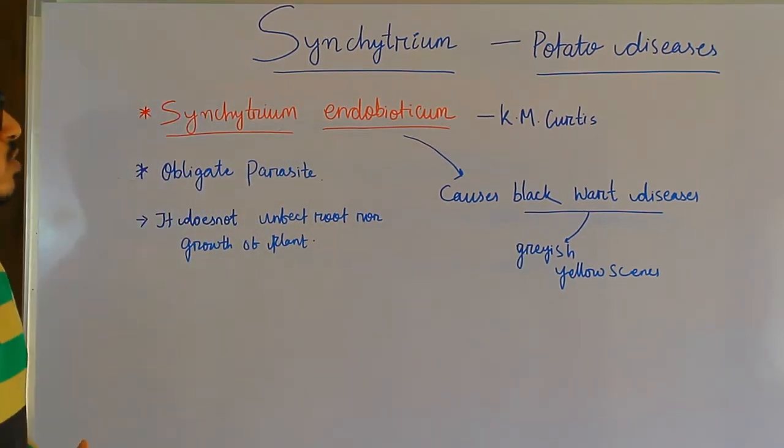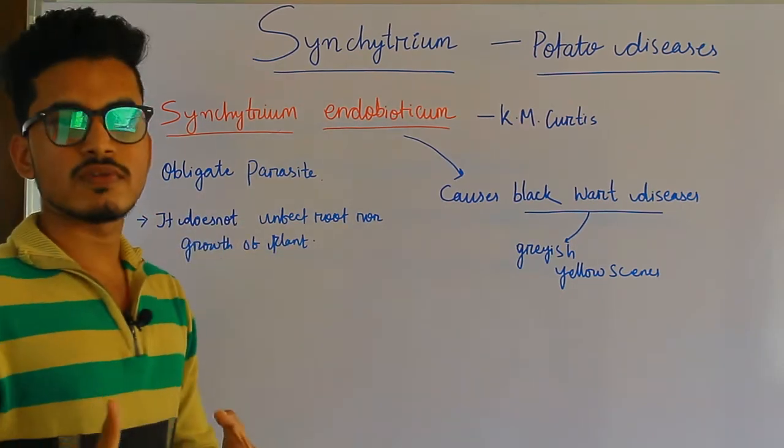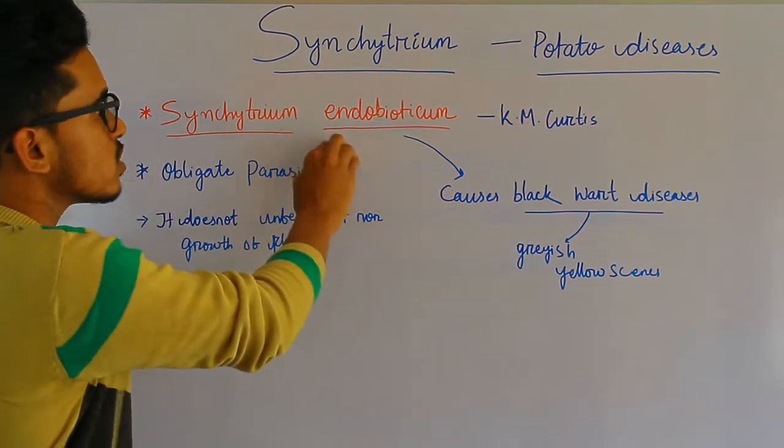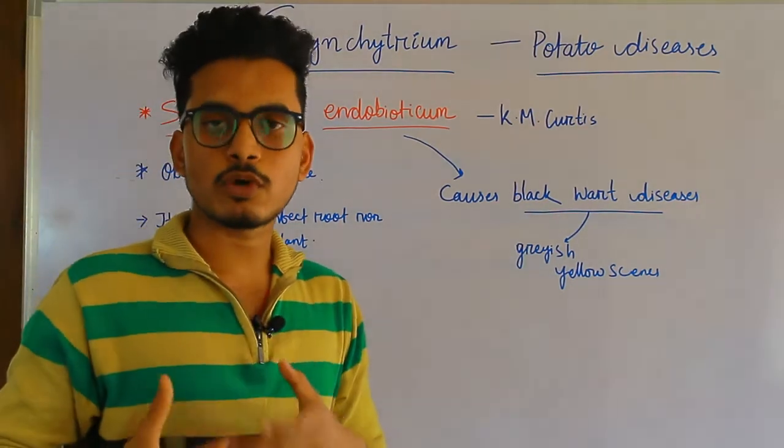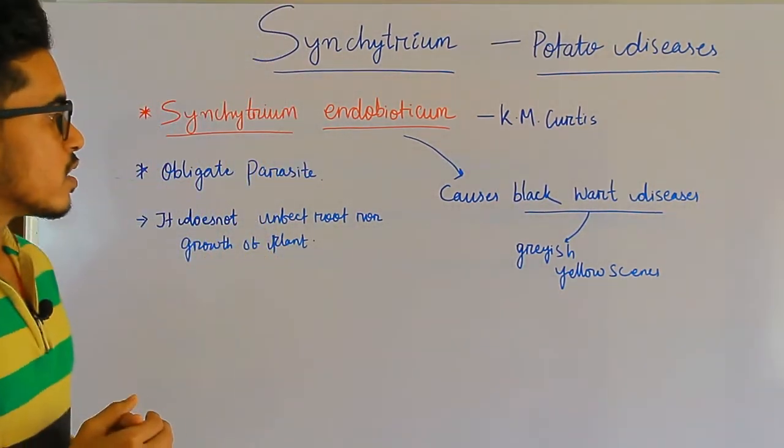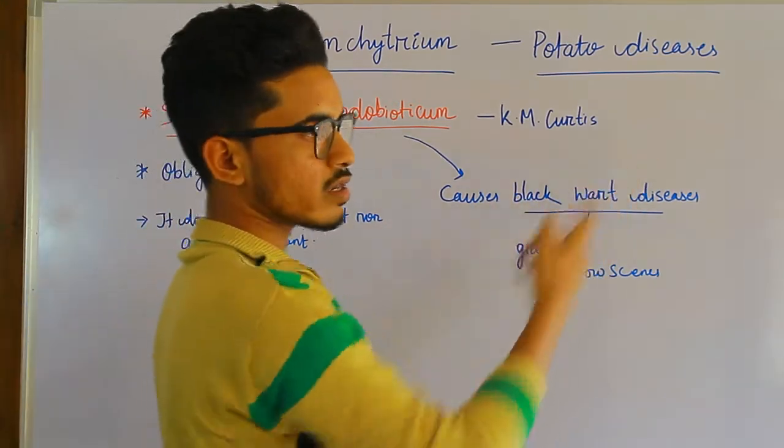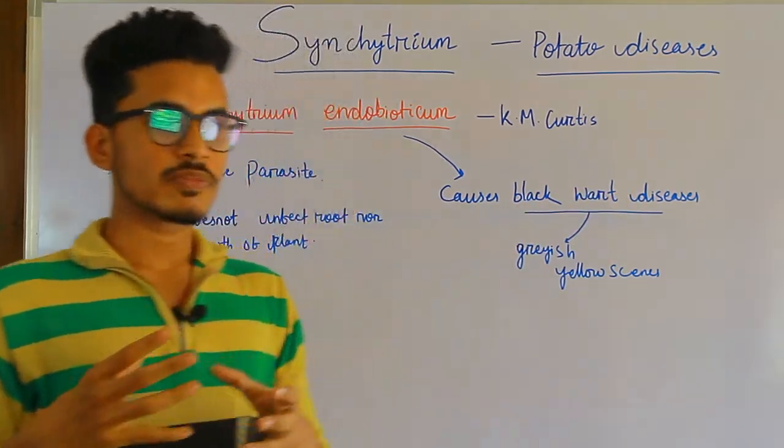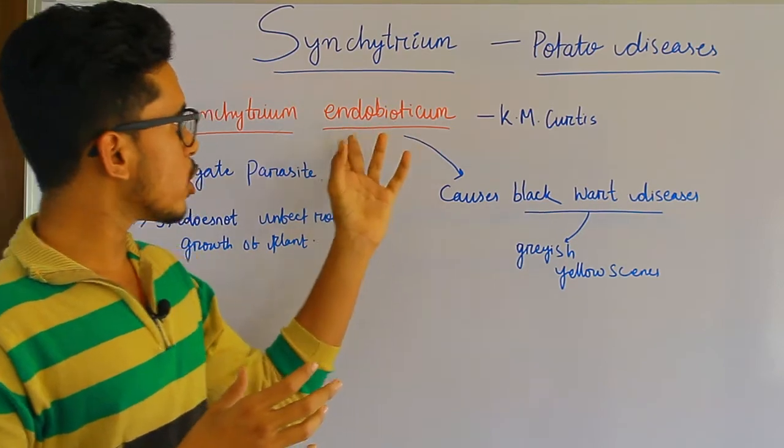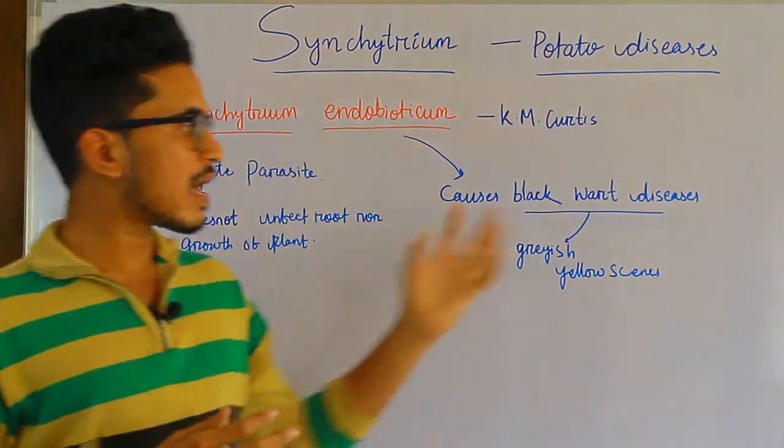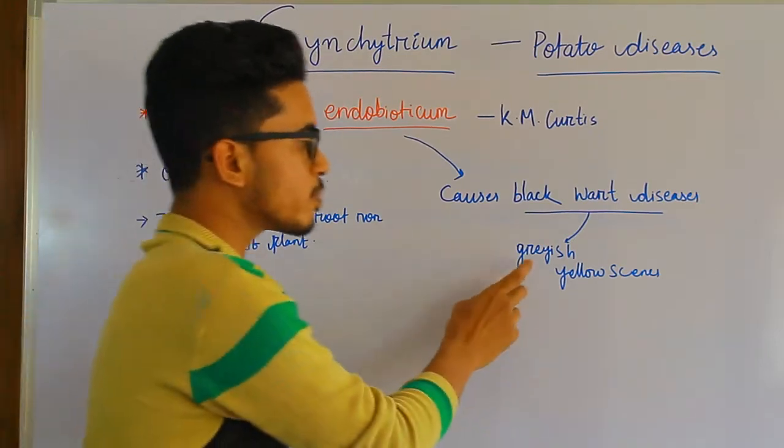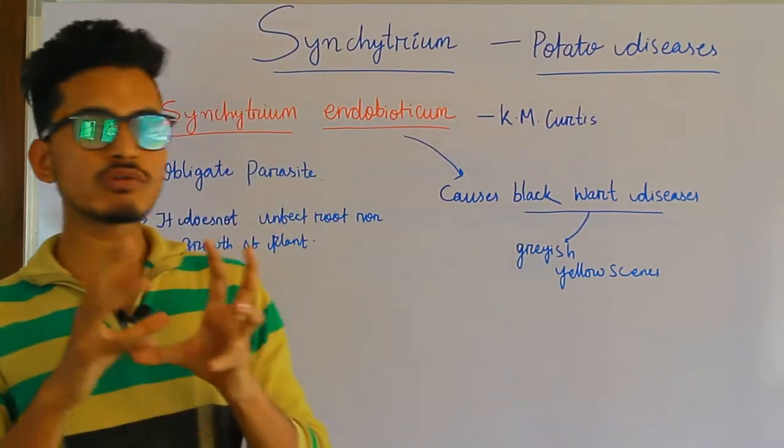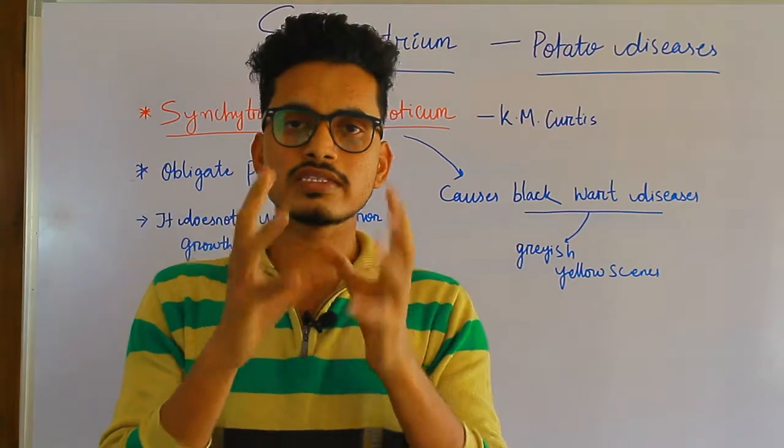Let's discuss the effect of Syncytium endobioticum on the potato plant. It causes black wart disease. This disease produces gray and yellow lesions inside the potato tuber.